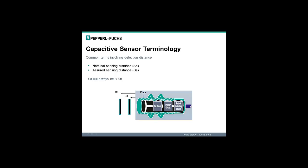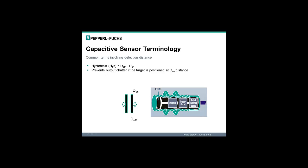Here we see pictorially the difference between the nominal sensing distance and the assured sensing distance. Note that the assured sensing distance will always be lower than the nominal sensing distance. Here we see pictorially the definition of hysteresis. Note that the D, or on distance, is the position at which the sensor changes to the active or on state. When the target is moved away from the sensing face, it will reach a position where the sensor changes to the inactive or off state. The difference between these two distances is defined as hysteresis, and is designed into the sensor to minimize output chatter or instability when the target is at the activation distance.